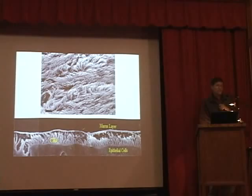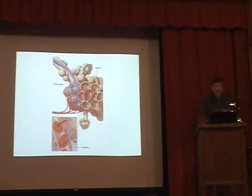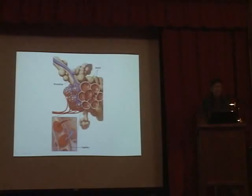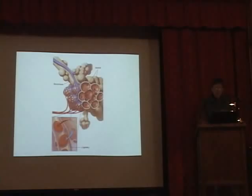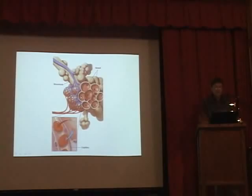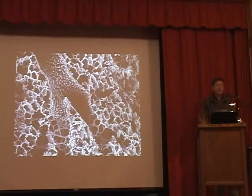Down in the alveoli, blood vessels surround each tiny air sac, and that's where the magic gas exchange takes place. Oxygen leaves the air sac and enters the blood; carbon dioxide leaves the blood and enters the air sac. The alveoli are where this back-and-forth exchange happens continuously.